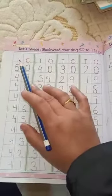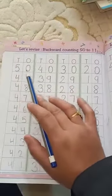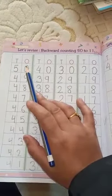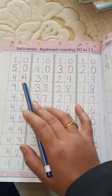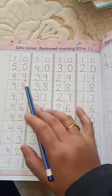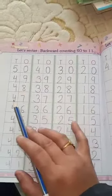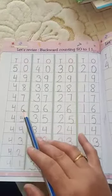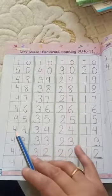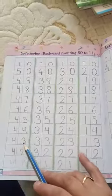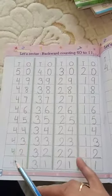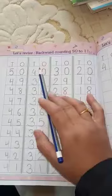So let's start. Tens ones. 5, 0, 50. What comes after 50 in backward counting? Yes, 49, 48, 47, 46, 45, 44, 43, 42, and 41.